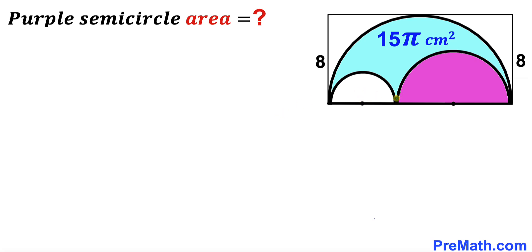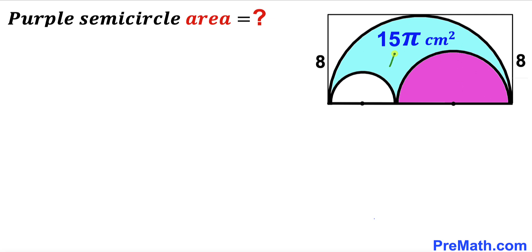Welcome to pre-math. In this video we have these three semicircles: the white one, the purple one, and the big semicircle, all placed inside a rectangle. The side length of this rectangle is 8 cm and the area of the blue shaded region is 15π cm². Our task is to calculate the area of the purple shaded semicircle.